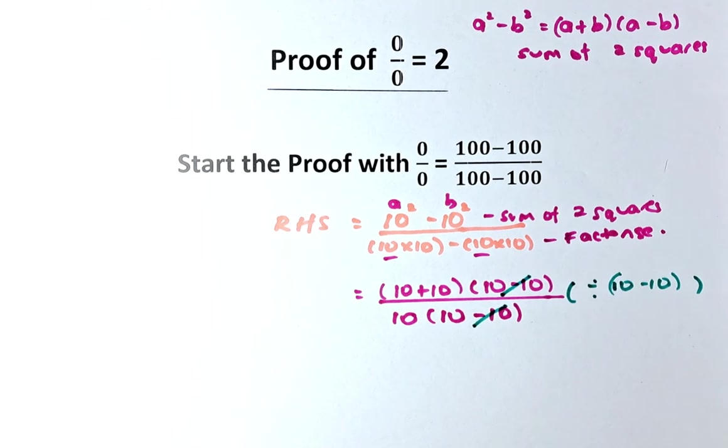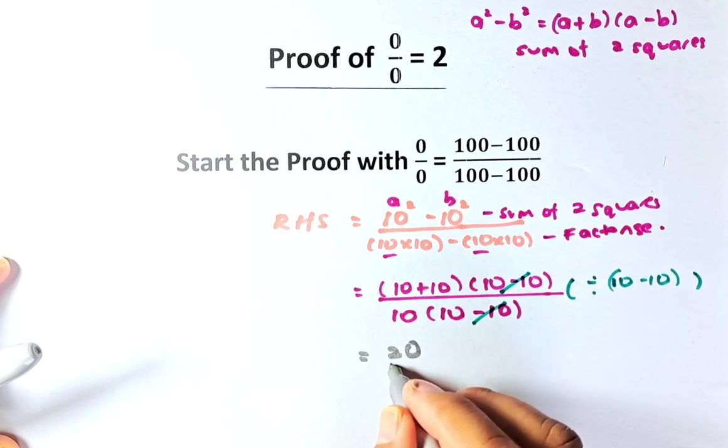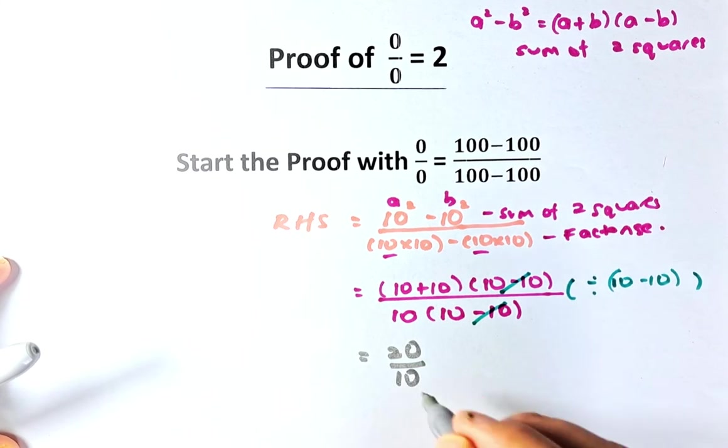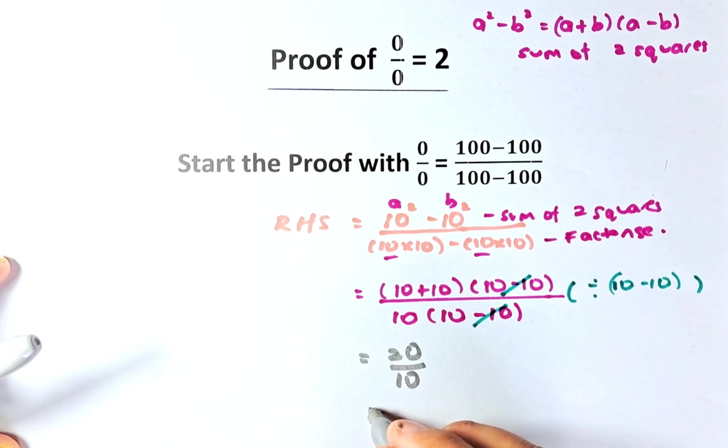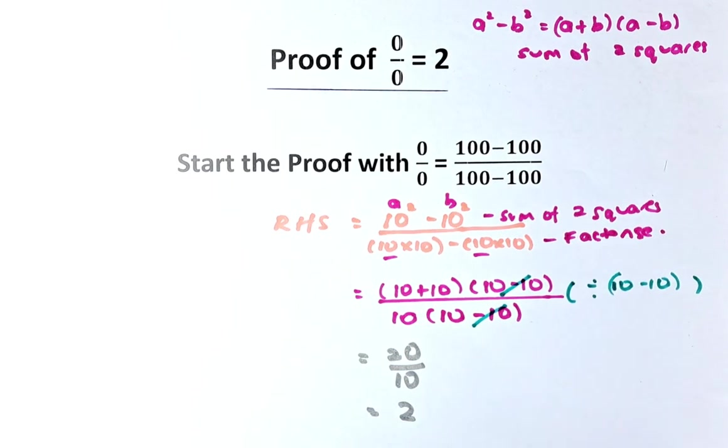So now, when we divide by that number, what we are left with is 10 plus 10, which is going to be 20. And the denominator is going to be 10. So what we are left now is going to be 20 divided by 10 is equal to 2.